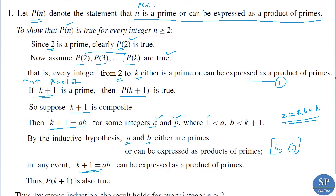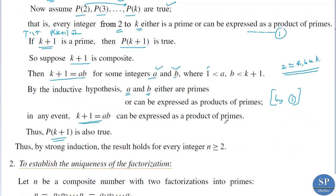In any case, k+1 = a·b can be expressed as a product of primes, because a and b are either primes or products of primes. So P(k+1) is also true if P(2), P(3), …, P(k) are true. Therefore, by strong induction, P(n) is true for every integer n ≥ 2. This is the first part.